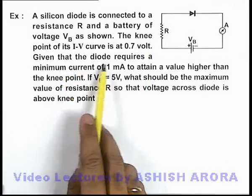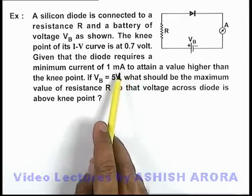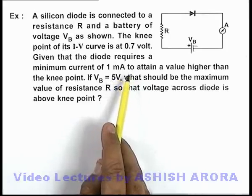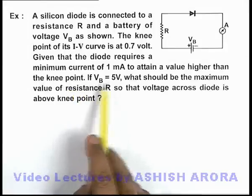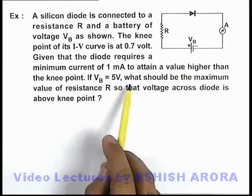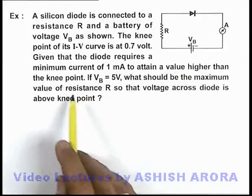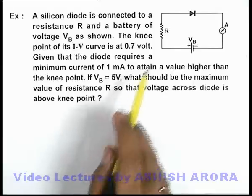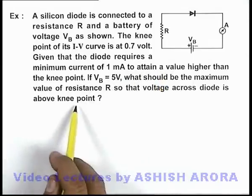And it is also given that the diode requires a minimum current of 1 milliampere to attain a value higher than the knee point. Now if battery voltage is 5 volt, what should be the maximum value of resistance R so that the voltage across diode is above knee point?